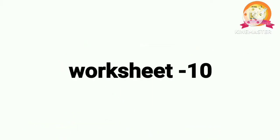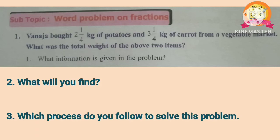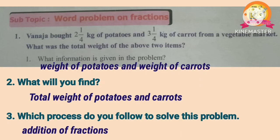Worksheet 10. First problem: Vanaja bought 2 1 by 4 cages of potatoes and 3 1 by 4 cages of carrot from a vegetable market. What was the total weight of the two items? Information given: weight of potatoes and weight of carrots. What to find: total weight. Process: addition of fractions.